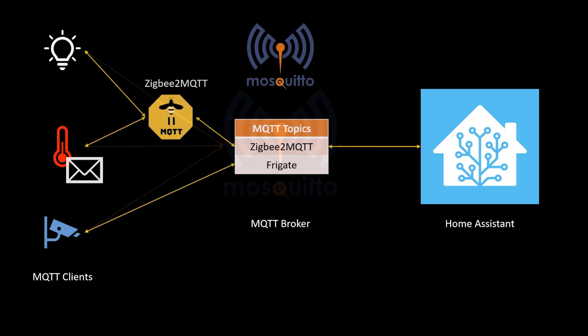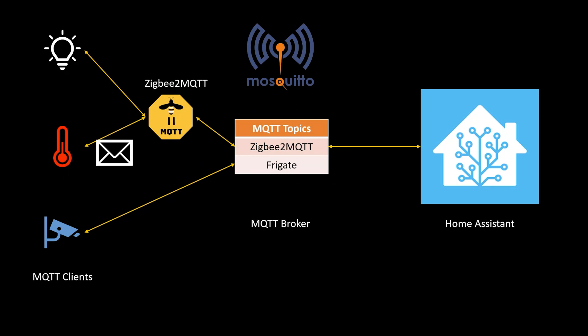MQTT lets you manage potentially hundreds of thousands of network-connected devices using a single service. If you want more information about how MQTT works, check out the video I made about this linked below. All you really need to know is that MQTT is a scalable and fast way to control lots of smart home tech, and it works really well with Home Assistant. Zigbee2MQTT acts as a bridge, translating messages between your Zigbee devices and MQTT, which in turn talks to Home Assistant.